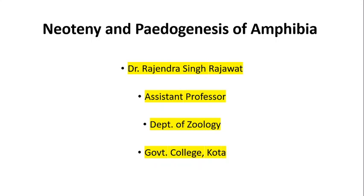The first term, Neoteny, refers to the retention of a larval or embryonic trait in the adult body. For example, retention of an embryonic cartilaginous skeleton in adult chondrichthyes, and another example is larval gills in some adult salamanders.